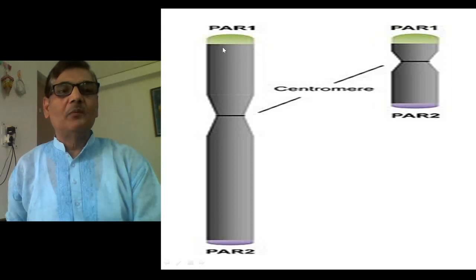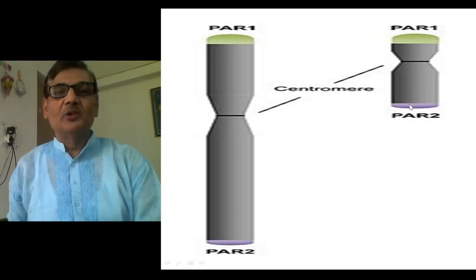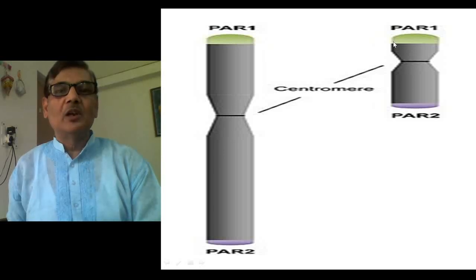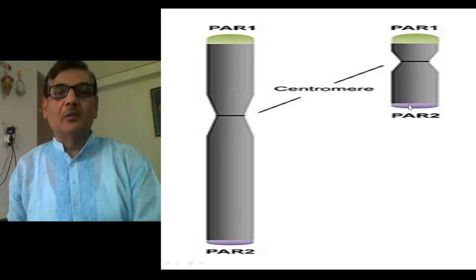Let us have a clear understanding of what pseudo-autosomal genes mean. If you observe the X and Y chromosomes, you will find that at the extreme tips of the X chromosome there are regions exactly similar to regions present on the Y chromosome. That is why X and Y chromosomes are considered homologous chromosomes — they have homologous parts in both chromosomes. Although they look morphologically very different, because of the presence of such regions, they can pair during meiotic division. Genes located on this extreme portion of X and Y chromosomes can pair during the pachytene stage of prophase 1.